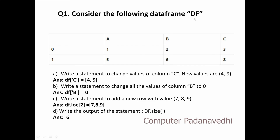Consider the following DataFrame DFR. We have A, B, C — 3 columns. We have an index of 0 and 1 automatically. First question: write a statement to change the values in column C. New values are [4, 9]. The value of C was [3, 8], now it becomes [4, 9]. df['C'] equals [4, 9].